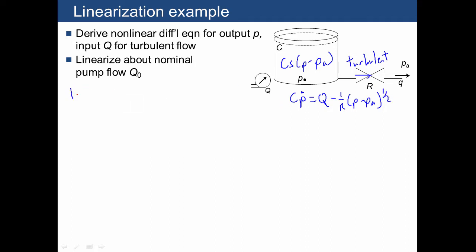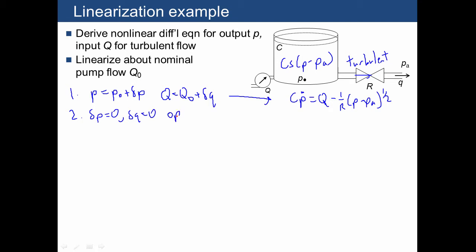The first thing we want to do is figure out our deviations, so we'll have P equal to P₀ plus δP, and Q equal to Q₀ plus δQ. We'll plug these into our differential equation and set the deviations equal to zero in order to solve for the operating point.